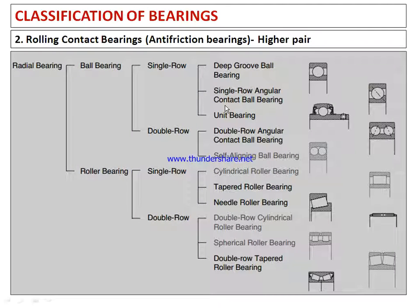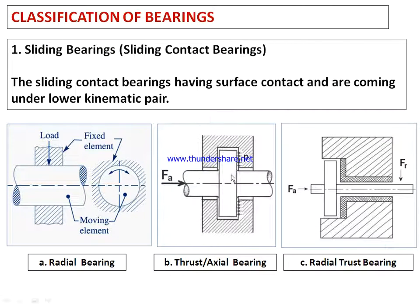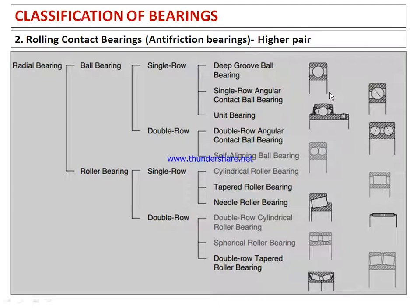The second category of bearings is called rolling contact bearings or rolling element bearings. In sliding contact bearings, due to surface-to-surface contact, friction is initially high but decreases as speed increases. In rolling contact bearings, the nature of contact is either line or point, hence they form a higher pair. A ball rolls and a roller also rolls — that is why these are called rolling contact bearings. The rolling elements — ball or roller — roll in the outer race and the inner race.